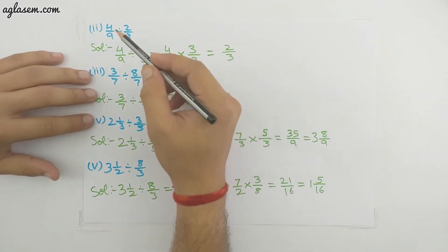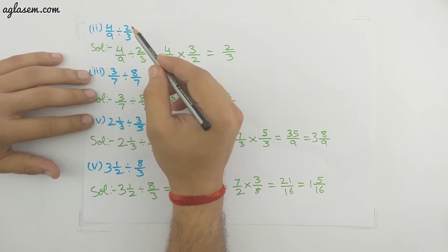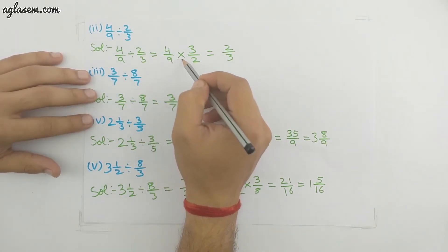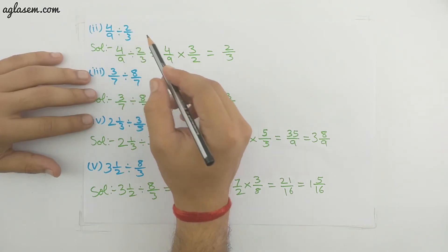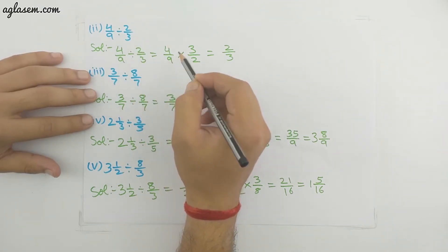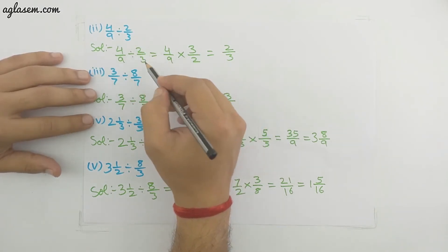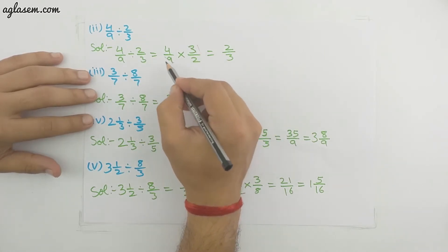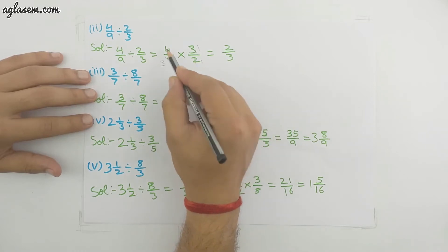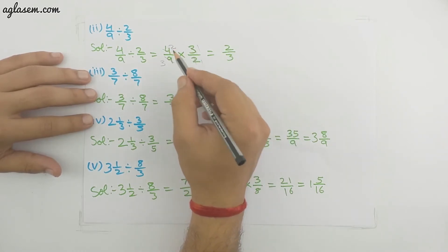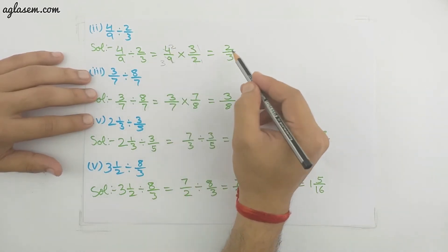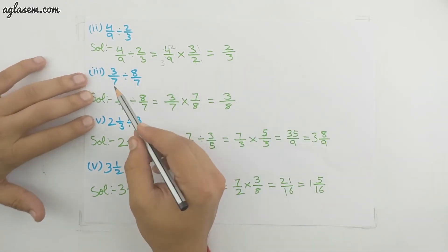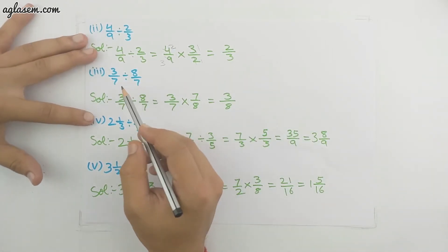Second part: 4/9 divided by 2/3. The divide sign changes to multiply and 2/3 becomes 3/2. With cross-cancellation — 3 and 9 share factor 3, and 2 and 4 share factor 2 — we get 2/3, which is a proper fraction.